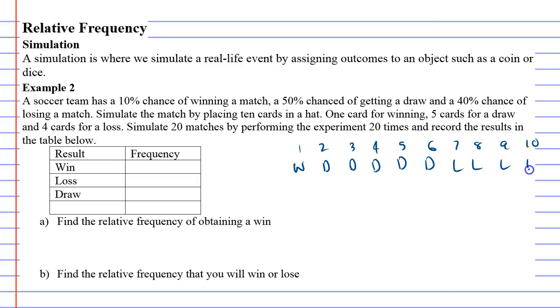What we've done is we've said: if we get a 1, that's a win. Any number from 2 to 6 is a draw, and any number from 7 to 10 is a loss.